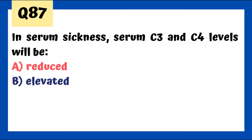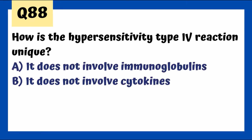In serum sickness, serum C3 and C4 levels are reduced — they're being used up depositing in tissues. Type 4 hypersensitivity is unique because it does not involve immunoglobulins. Type 1 involves IgE, type 2 involves antibodies, type 3 involves antigen-antibody complexes. Type 4 involves either direct cell cytotoxicity with CD8 or CD4 effector cells recognizing antigen.